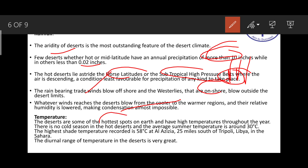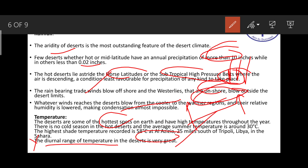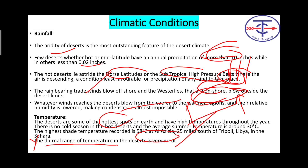Regarding temperature, deserts are the hottest spots in the world with higher temperatures throughout the year. There is no cold season in hot deserts. The most important point is the diurnal range of temperature — the difference between day and night temperatures — which is very great in deserts. This is a key concept discussed multiple times and important for exams.